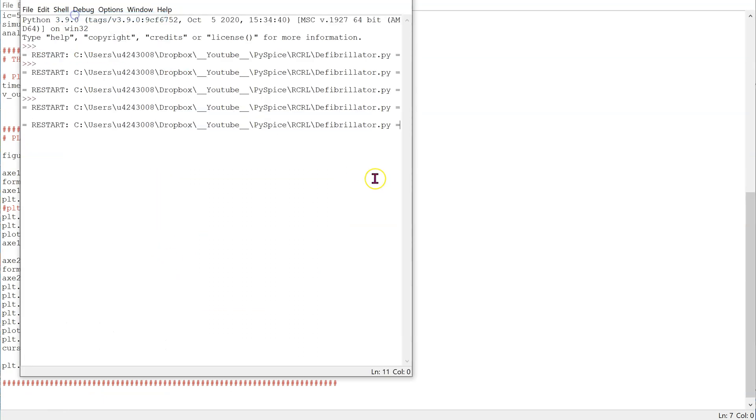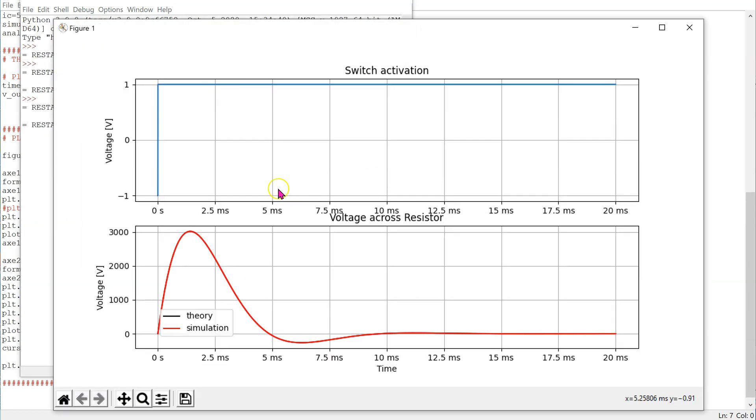When we run this code we can see both the switch activation as well as the output voltage results. We can see that the simulation and theory curves actually overlap and match perfectly, and we have the same output waveform as before.